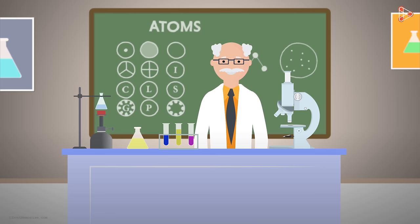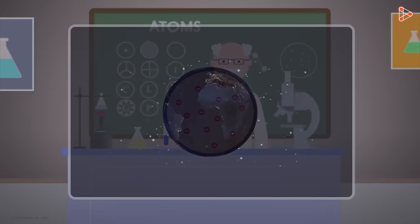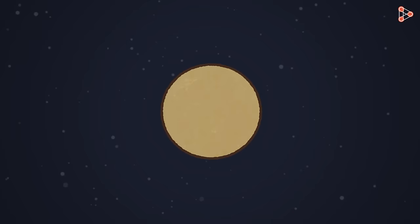However, several experiments performed by scientists to study the atomic structure showed astonishingly different results. They were contradicting the Plum Pudding model. This led many scientists all over the globe to reconsider the structure of an atom and study it again.